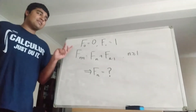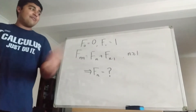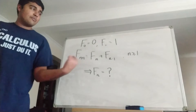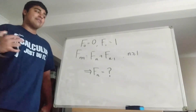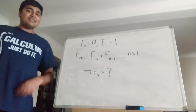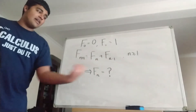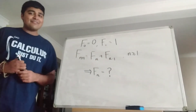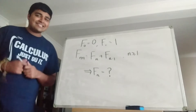So let's just recap what the Fibonacci numbers are. We have F0, the Fibonacci number is 0, F1 is 1, and then all subsequent Fibonacci numbers are given by this recurrence relation here: F of n plus 1 equals F of n plus F of n minus 1. So the next Fibonacci number is equal to the sum of the two previous Fibonacci numbers. And we want to derive an explicit formula for the nth Fibonacci number. Without much further ado, let's get stuck into the proof.